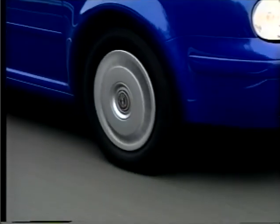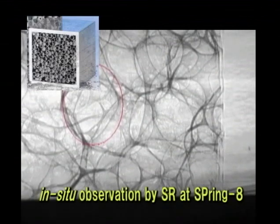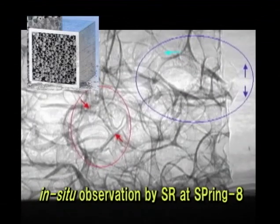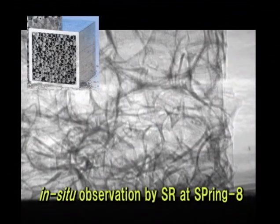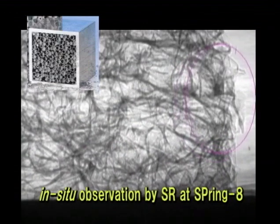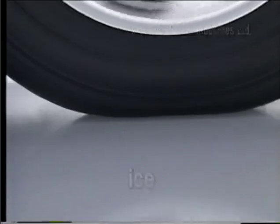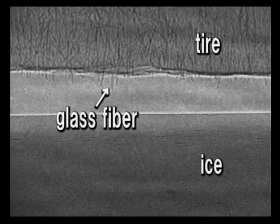Synchrotron radiation is also useful in developing bumpers and tires. Bumpers are made of a buffer material that consists of foam aluminum, and synchrotron radiation can show how the buffer material is crushed during a collision. Synchrotron radiation can also capture how glass fibers that are blended into studless tires bite into ice. Such images cannot be obtained with conventional X-rays, which penetrate ice, glass fibers, and rubber in the same manner. In comparison, synchrotron radiation at Spring-8 is sufficiently parallel that even the slightly different refractions of these three elements results in increased imaging contrast.